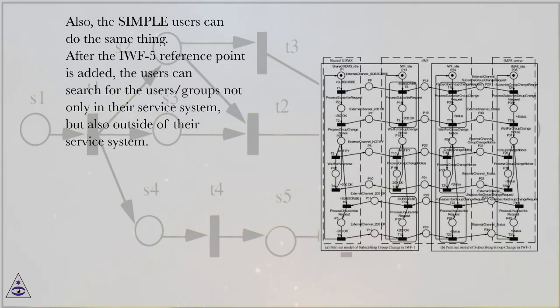After the IWF4 reference point is added, the IMPS users can use the Simple group for communication and can retrieve the information of the group participant who is the Simple user whenever they want, as long as the information has been authorized by the Simple user. Also, the Simple users can do the same thing. After the IWF5 reference point is added, the users can search for users/groups not only in their own service system but also outside of their service system.